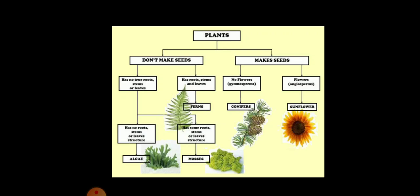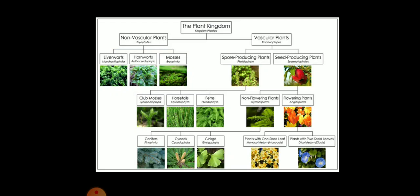Gymnosperms cannot produce the flowers, whereas the plants which produce flowers are known as angiosperms. In the next category — those that do not make seeds — they may also be categorized differently: those with no true roots, stems, or leaves are categorized under algae, whereas some with roots, stems, or leaves come under mosses. Those that won't make seeds but have roots, stems, and leaves come under the pteridophytes.